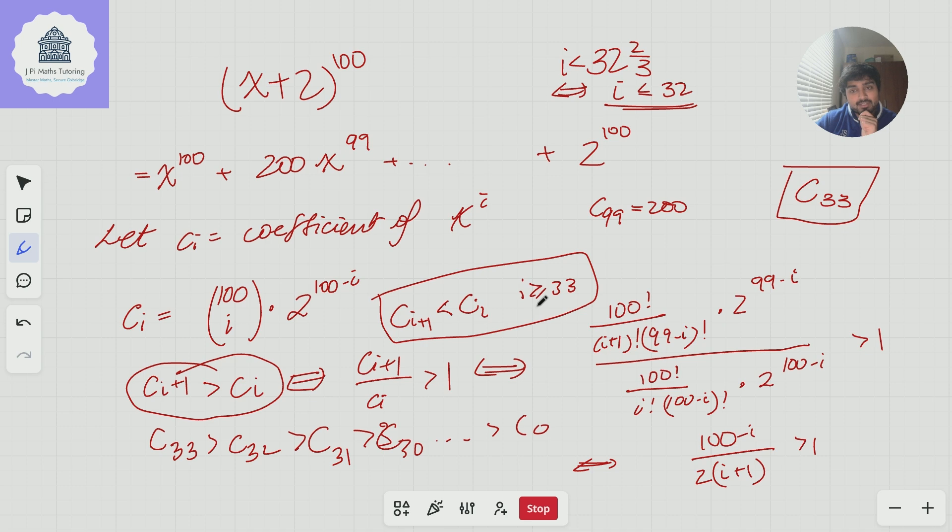And so therefore, if I just substitute i is 33 into this, I get that c_34 is less than c_33. And similarly, c_35 is less than c_34, which is already less than c_33, and so on. I get all the other binomial coefficients here are less than c_33, so that the coefficient of x to the 33 is the greatest in this expansion.